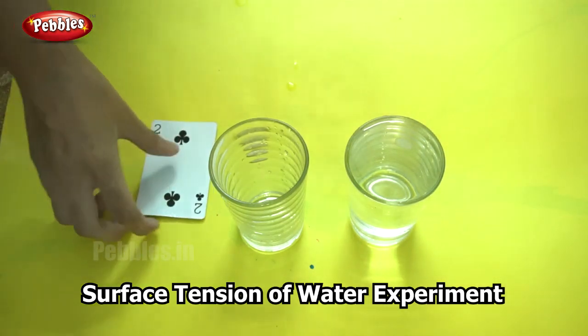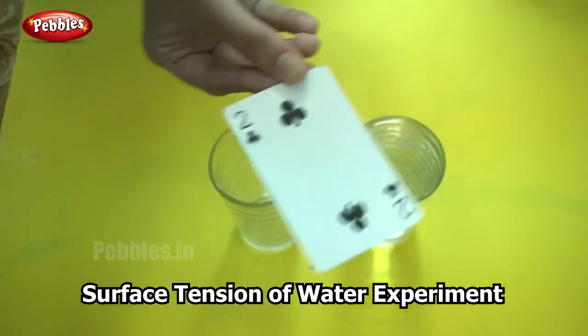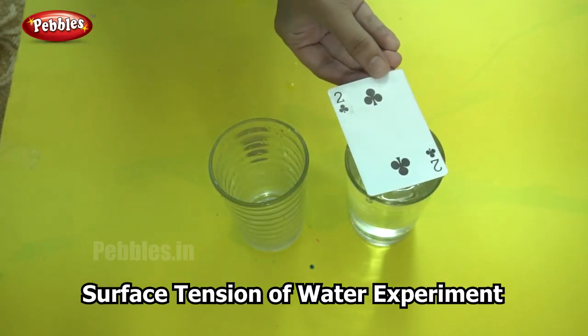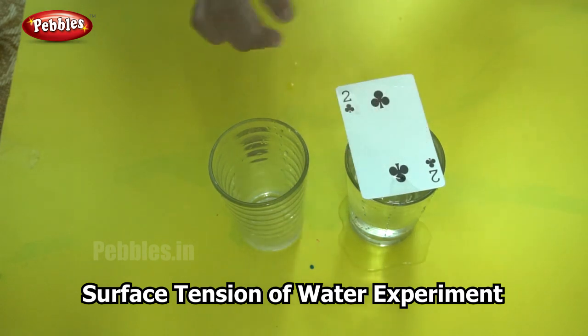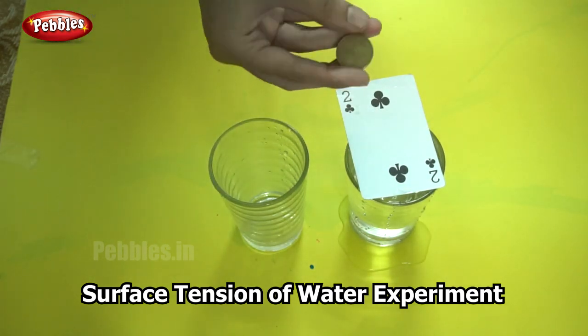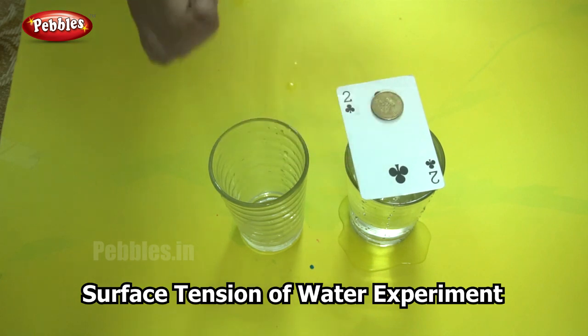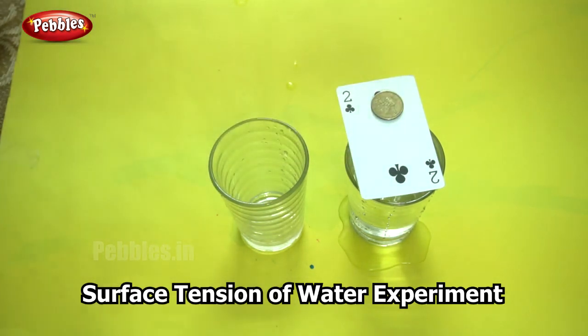Now I am going to do the same thing in the glass that is filled with water. So now, when I place the coin, it doesn't fall. So why does this happen?